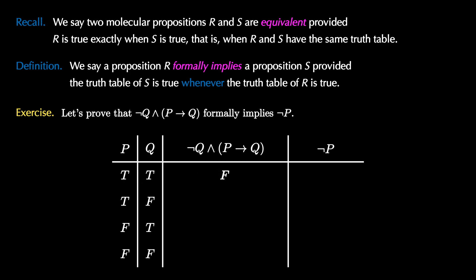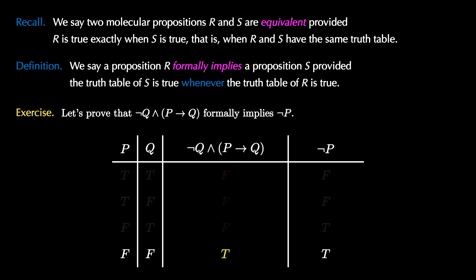We fill in the third column by applying the negation, the and, and the implication truth tables, and we get false, false, false, true. To fill in the column for not P, we negate the column for P. Once again, these two propositions are not equivalent, as we can see in the third row. To show that the first formally implies the second, we look for the rows where the first proposition is true — that's just the fourth row. Sure enough, the final proposition is also true in that row. Therefore, not Q and P implies Q formally implies the proposition not P.